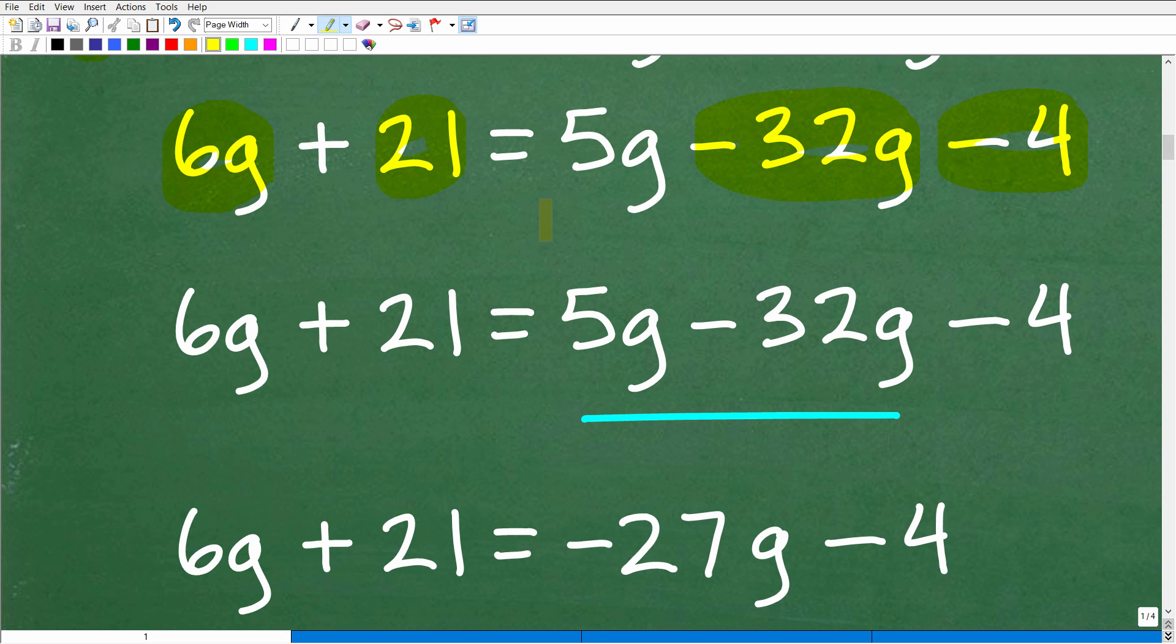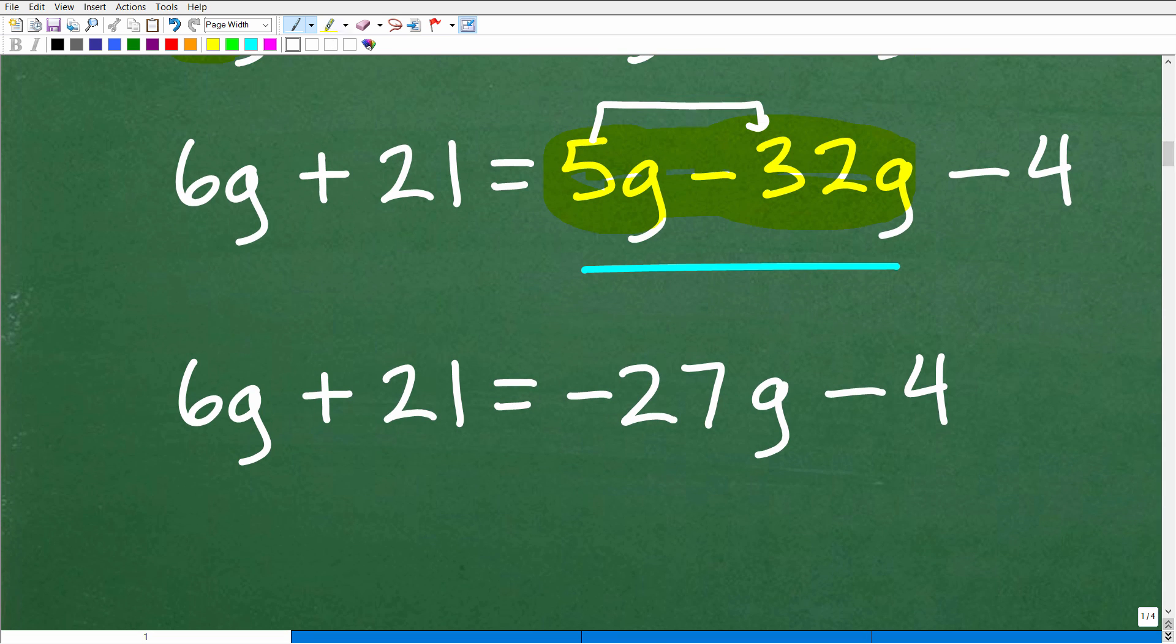All right, so now let's continue on. Before we start moving numbers and variables to either side of the equation, let's clean up what we have by combining like terms. So let's look on this side of the equation. We have 6g plus 21. We can't combine these. This is as simple as we can have this expression here. But here we have 5g and a minus 32g. These are like terms. In other words, we can combine these. So we just add the coefficients. 5 plus a negative 32 is a negative 27. So that's what we need to do next. We have 6g plus 21 is equal to negative 27g minus 4.